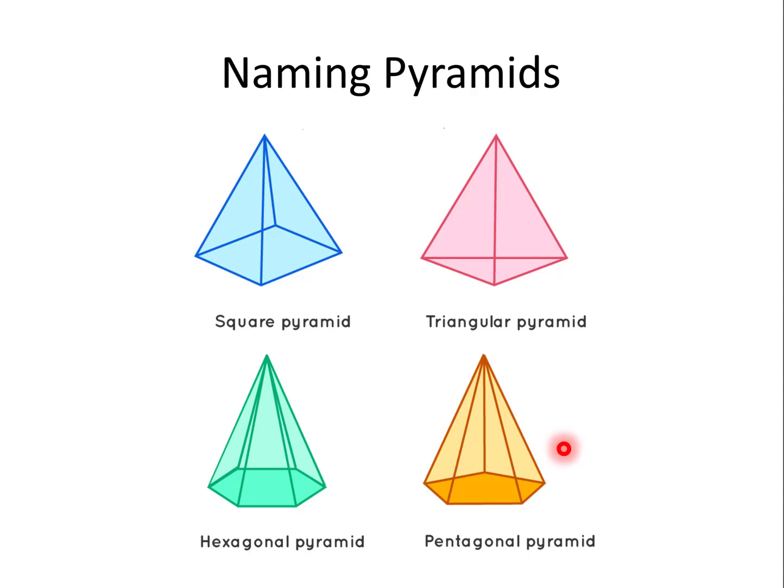As we'll see on the next slide, a triangular pyramid can also be called a tetrahedron, as tetra means 4 and it has 4 sides.